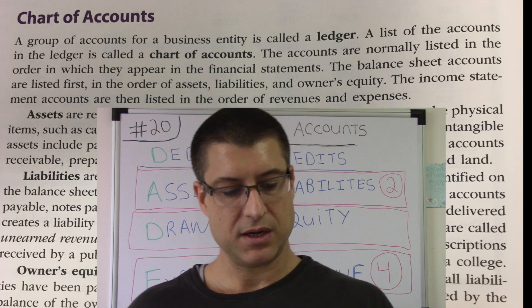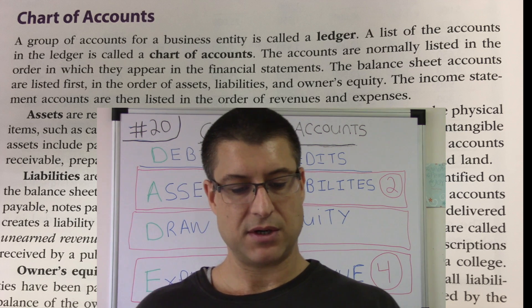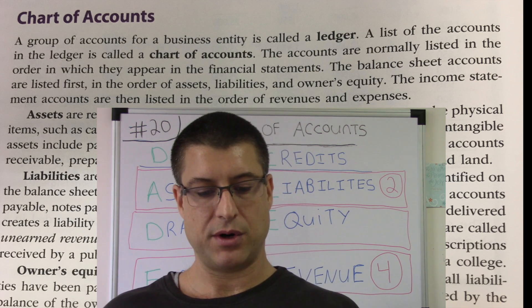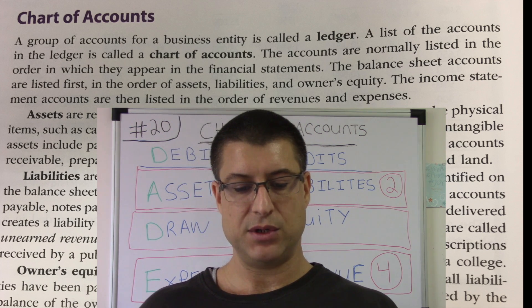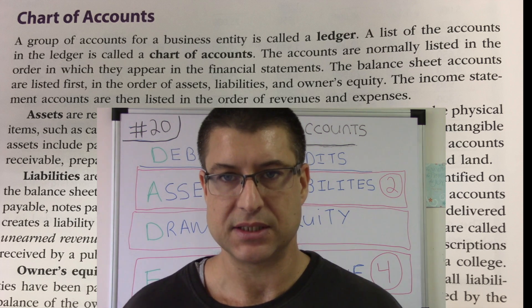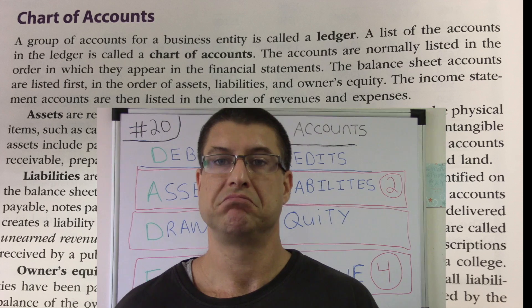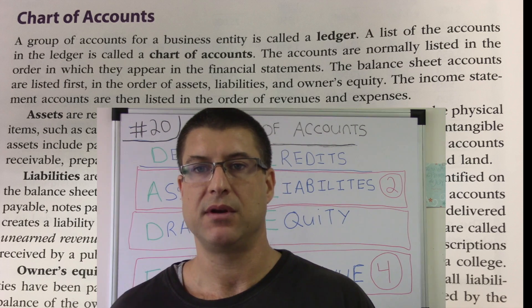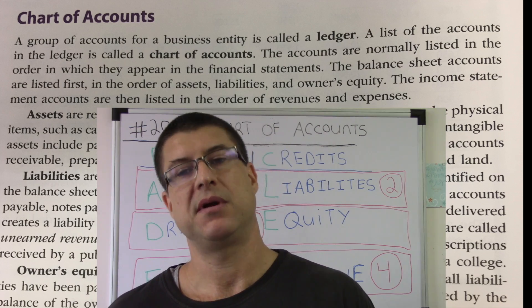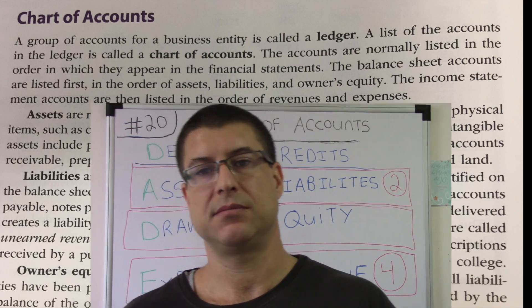The income statement accounts are then listed in the order of revenues and expenses. Revenues minus expenses — that's the income statement.